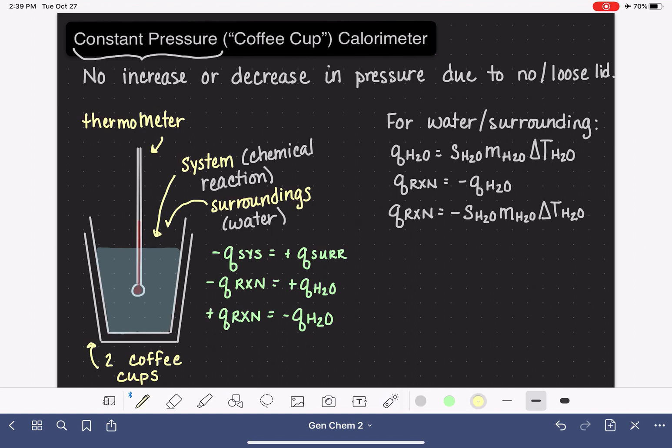In a previous video, we have defined that when we are at constant pressure, which we are in this particular case, we like to call Q delta H. So when we're at constant pressure, we like to use the symbol delta H in place of Q. They both refer to heat. They both mean the same thing.